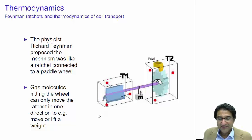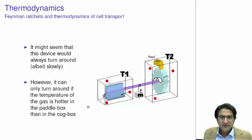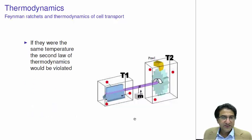So this is called the Feynman ratchet. It's an ingenious idea. And it is in fact the method by which kinesin works. It might seem that this device will always turn around, maybe a bit slowly, actually not that slowly, depends on the size of the systems and the temperature. But it can only turn around if the temperature of the gas in this is hotter than the temperature of the gas in the second box. And that's what Richard Feynman worked out. It's an amazing device.